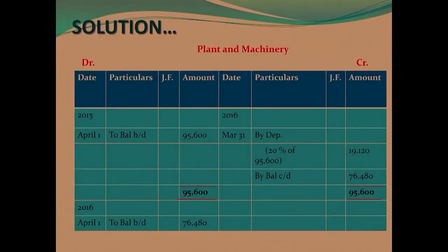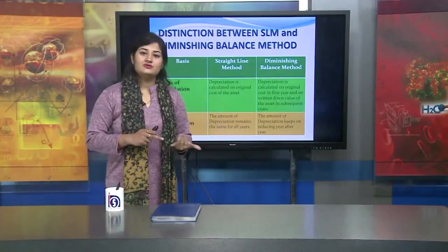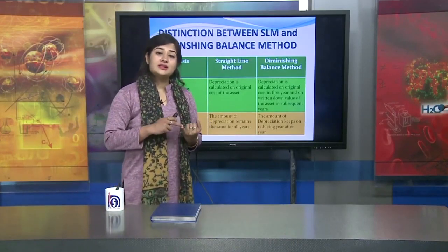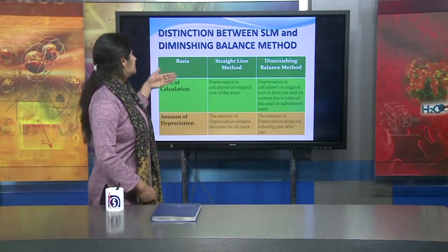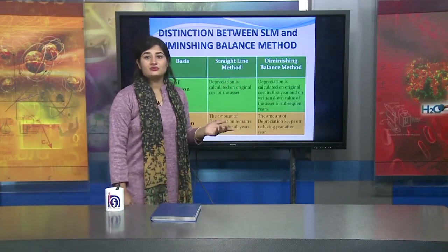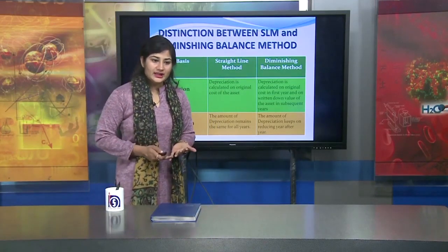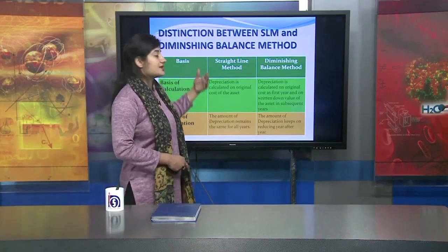For 2015-16, the balance of 95,600 is carried forward. Depreciation is 20 percent of 95,600, which is 19,120, and the closing balance is 76,480. The plant and machinery account is now complete. I hope the SLM method and Written Down Value Method calculations are now clear to you. If you have any questions or queries, we can resolve them.